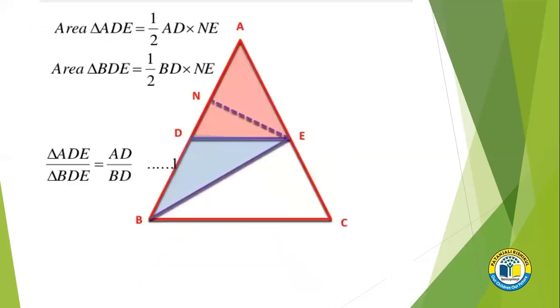So here we will take the area of the triangles, the ratio of their areas. First, triangle ADE and triangle BDE. Now these two are adjacent triangles, so their height must be the same. Triangle ADE takes AD as base, so it is half into AD into NE. And area of triangle BDE will be equal to half into BD into NE.